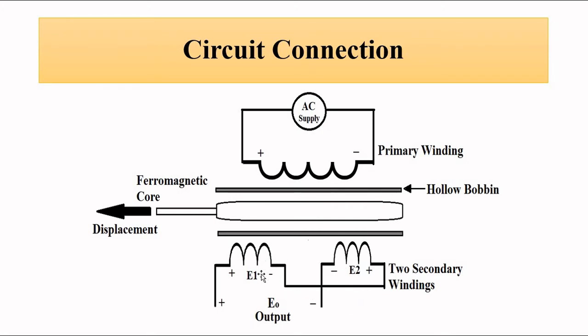Then there is a non-zero differential output voltage because one of the secondary winding voltages will be greater than the other. Since we are getting a differential output voltage, E1 minus E2, depending on whether E1 is greater than E2 or E2 is greater than E1, we will get a non-zero differential output voltage that can be positive or negative.